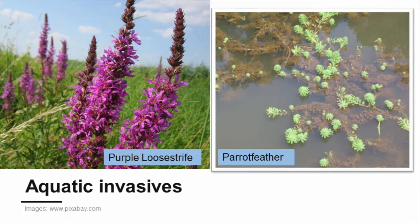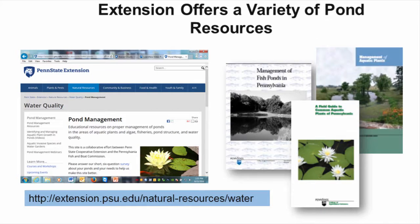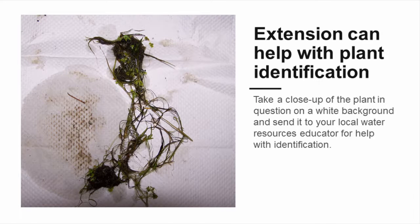There are many more types of aquatic plants common to Pennsylvania besides the ones mentioned in this video. Extension can be a resource for helping to identify plants in your pond. The website offers fact sheets, online courses, and publications, and Extension Educators can help with identification as well. If you are sending a digital picture to your local Extension Educator to be identified, it's best to take a close-up picture of the plant in front of a light-colored background, as well as a wide view of the plant as it grows in the pond.